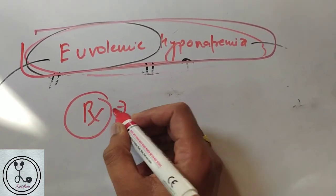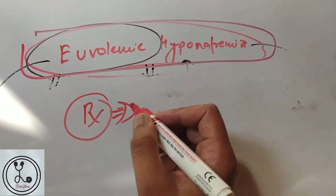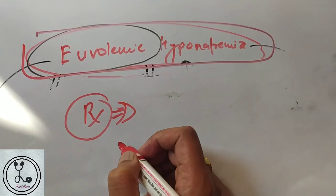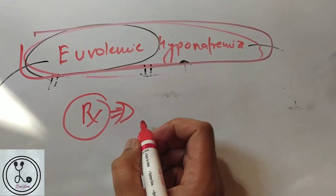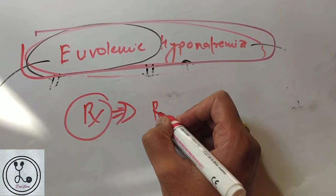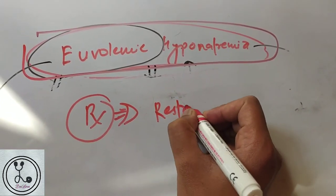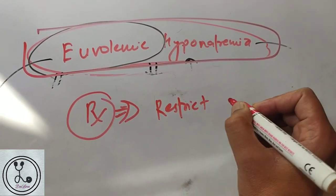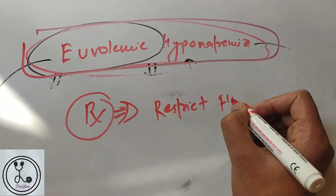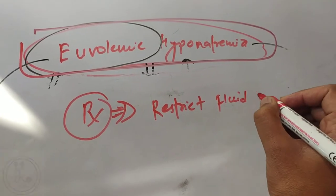Regarding treatment: since euvolemic hyponatremia involves increased total body fluid, the management is simply to restrict fluid intake.